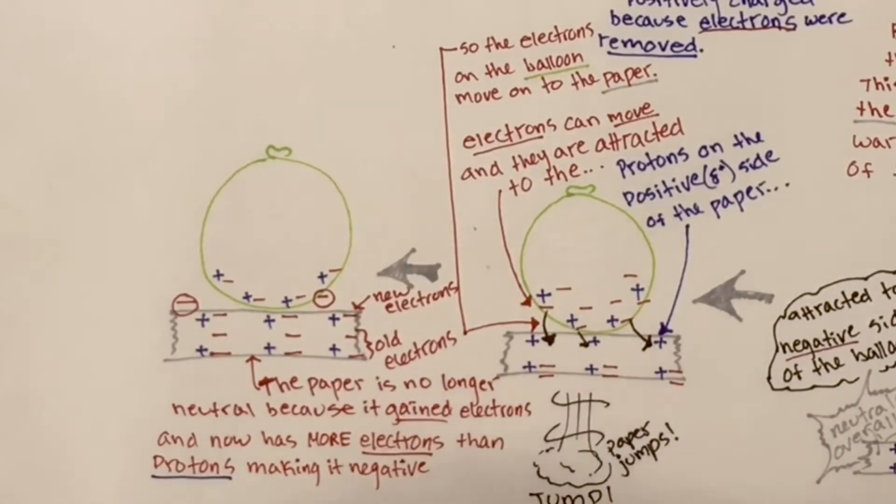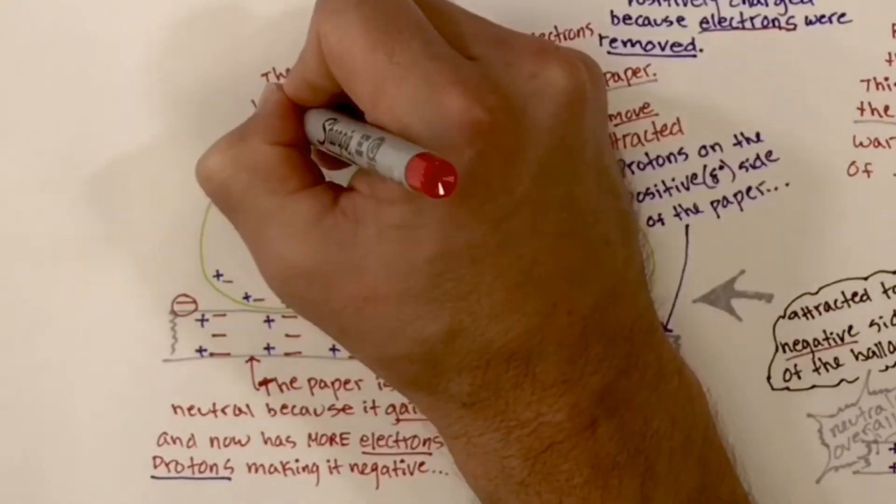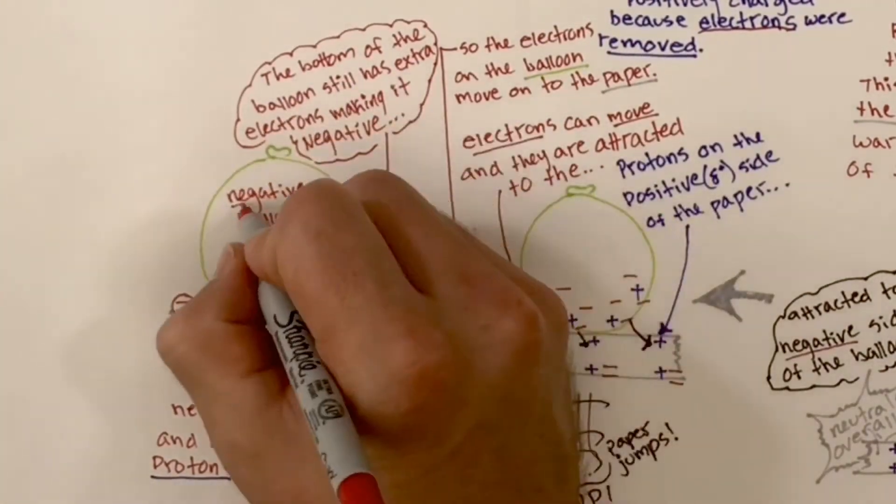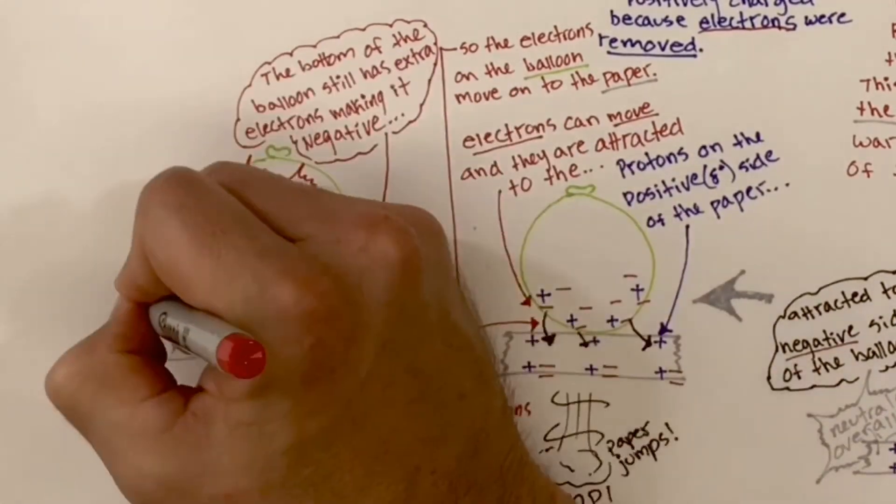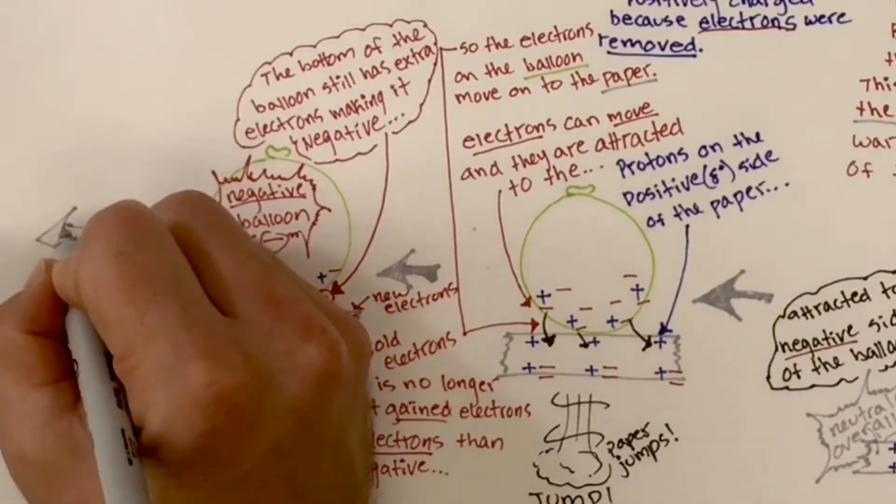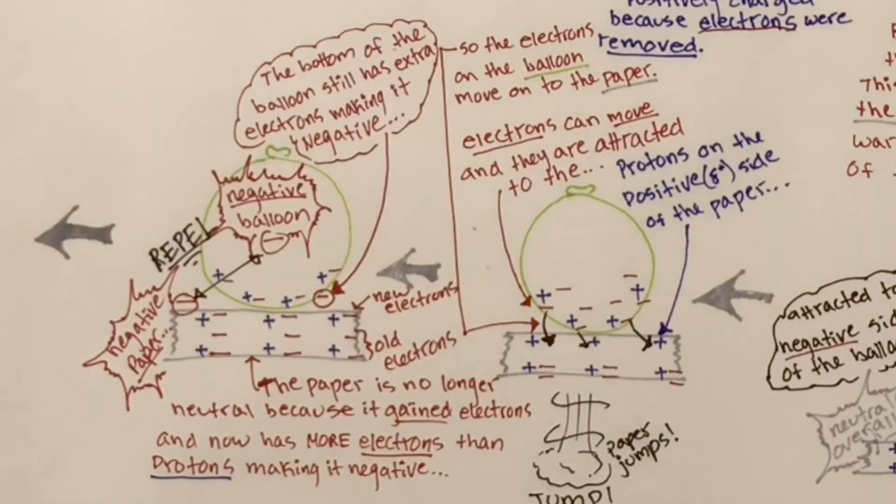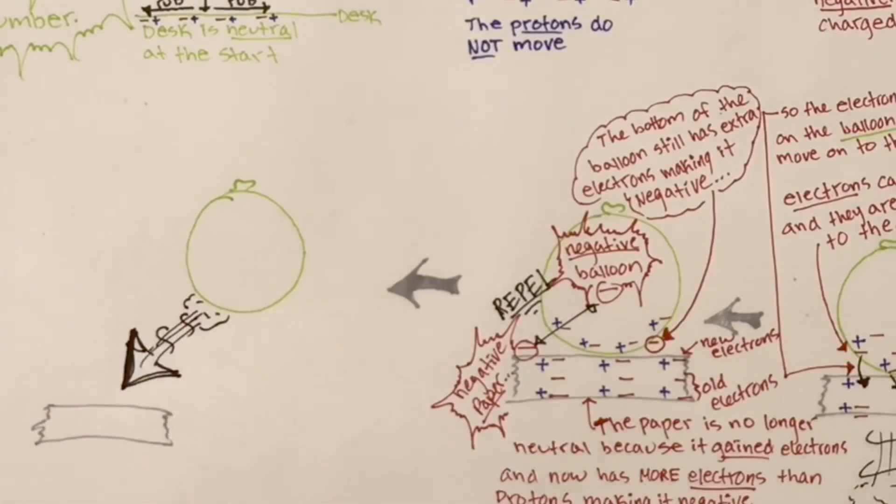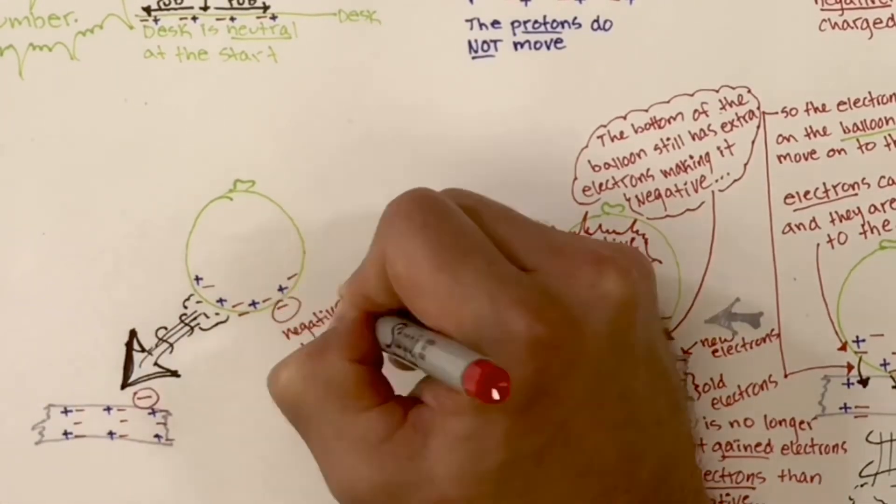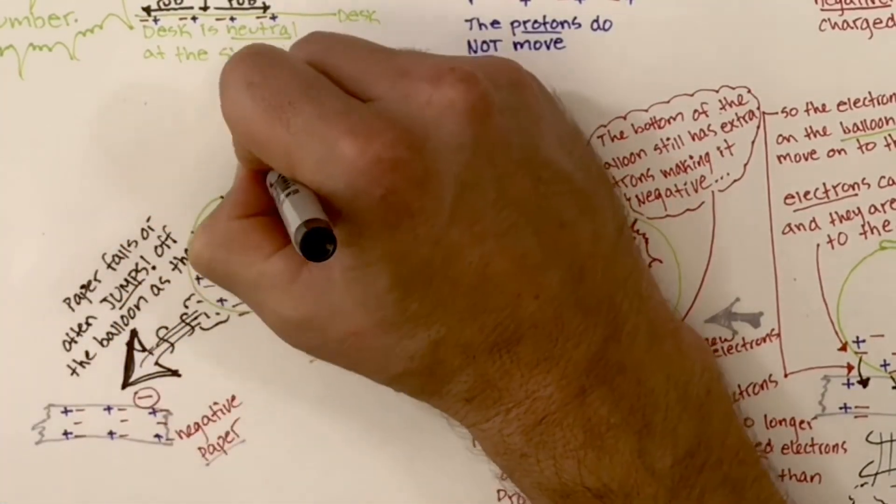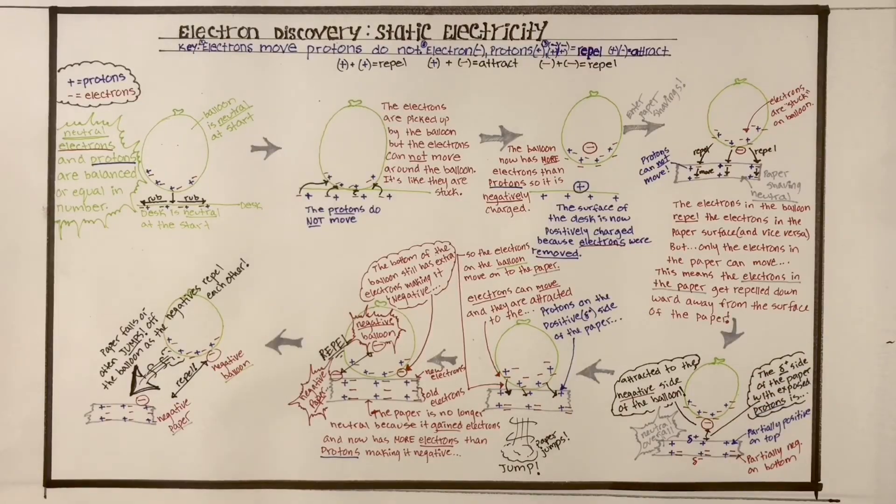It has more electrons than protons, making it negatively charged. So if we have a negative balloon and a negative paper, what's going to happen? So the bottom of the balloon still has extra electrons, making it negative. And the paper is negative. So when you got negative and negative, we got repulsion. So those two negative parts of the balloon and the negative part of the paper, they repel each other. What happens when it repels? We saw that paper jump off and fall off sometimes, which is just so cool. So the balloon is still kind of negative. The paper is still kind of negative. And the paper is falling and jumping off. So the paper falls or often jumps off the balloon as the negatives repel each other.